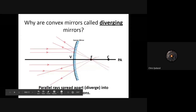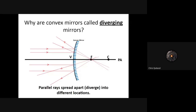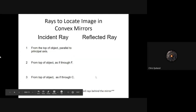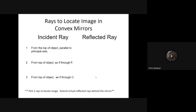Parallel rays spread apart and diverge into different locations, but those virtual dotted lines still follow the three rules we set up yesterday — they all converge on the focal point if the incident ray is traveling parallel to the principal axis. So with convex mirrors: if the incident ray from the top of the object is parallel to the principal axis, it's going to reflect through F, but it will be those dotted lines — those virtual rays — not the actual reflected ray.